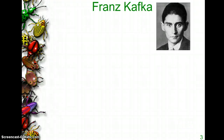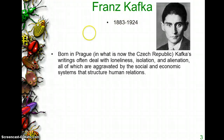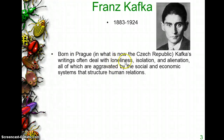I wanted to give you a little background on our author because his background does come into play with the story. He was born in 1883 and he died in 1924, so this is definitely a story written quite a long time ago. He was born in Prague, which is now the Czech Republic, and Prague is actually where the story takes place. Usually Kafka's writings dealt with three topics: loneliness, isolation, and alienation, and you are going to see all three of those in this story.